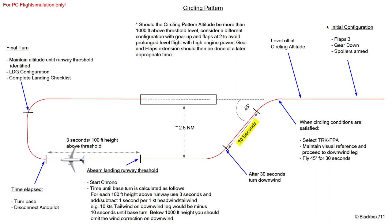I would suggest that above 1,000 feet height above the landing threshold, do a wind correction: for every knot of tailwind you subtract one second. If you have headwind — which normally you wouldn't — then add one second per knot headwind component. Below 1,000 feet height I would omit those wind corrections, because then the whole procedure regarding base turn etc. will become very hectic, which you should avoid.